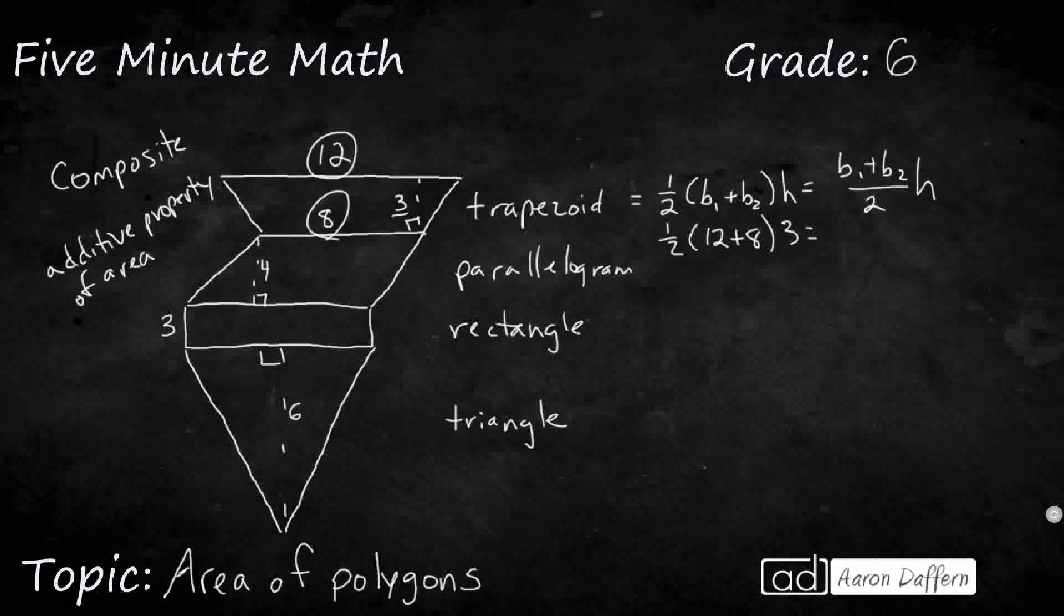So I'm going to have 1/2 times 20 times 3. What's half of 20? That's going to be 10. So that's 10 times 3. This is 30 units squared for the trapezoid.